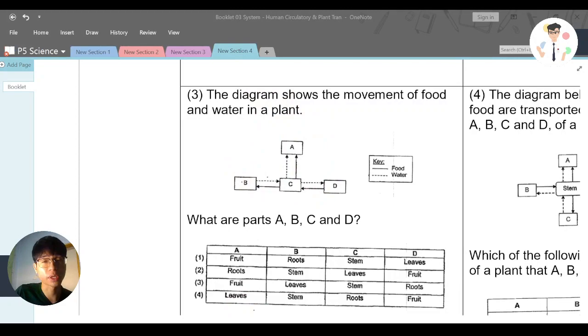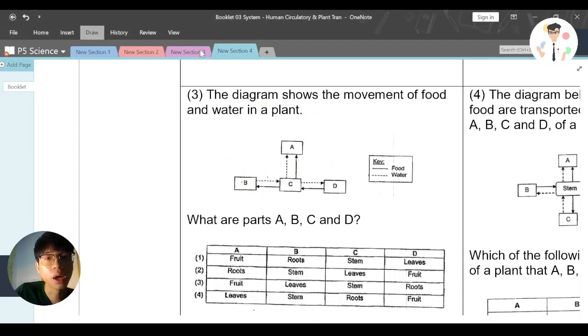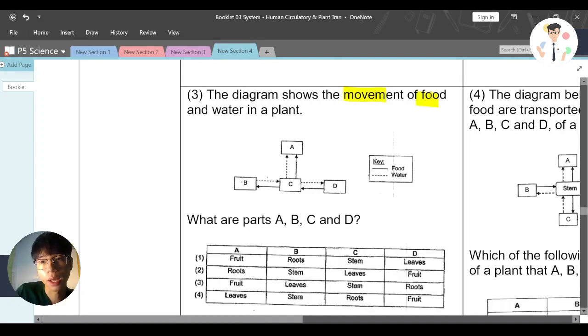Welcome back to digital class, and now we're looking at this question. Here say that the diagram shows the movement of food and water in the plant, which are parts A, B, C and D.